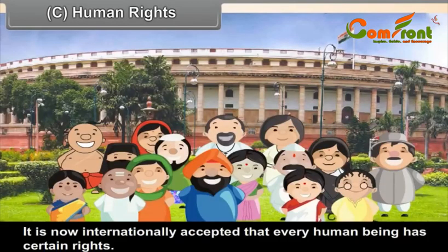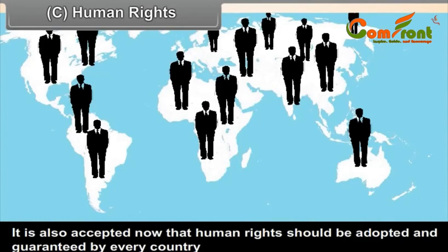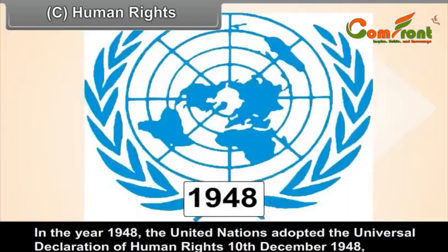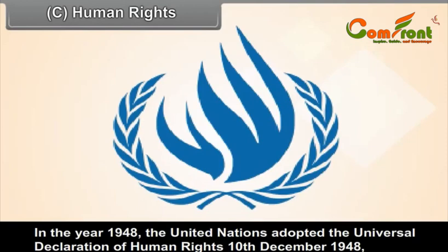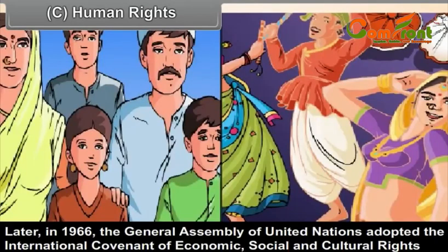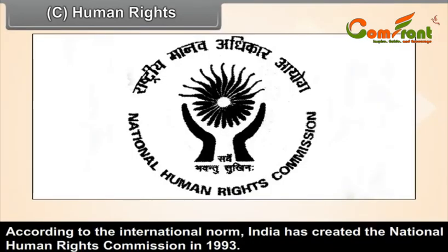Human Rights. It is now internationally accepted that every human being has certain rights, described as human rights. It is also accepted that human rights should be adopted and guaranteed by every country, and a necessary mechanism for their protection should be created. In 1948, the United Nations adopted the Universal Declaration of Human Rights. Later, in 1966, the General Assembly of the United Nations adopted the International Covenant of Economic, Social and Cultural Rights, which many countries have signed. According to the International Covenant, India created the National Human Rights Commission in 1993.